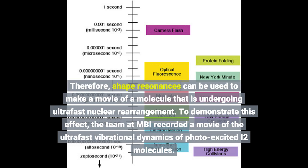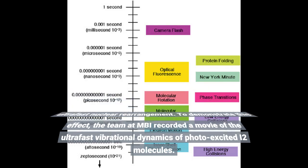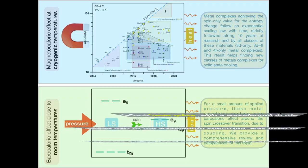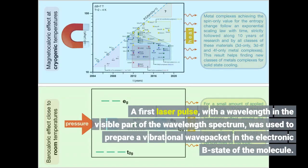To demonstrate this effect, the team at MBI recorded a movie of the ultra-fast vibrational dynamics of photo-excited I2 molecules. A first laser pulse, with a wavelength in the visible part of the wavelength spectrum, was used to prepare a vibrational wave packet in the electronic B-state of the molecule.